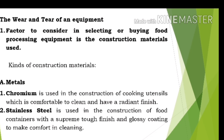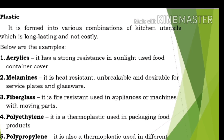The wear and tear of equipment is a factor to consider. A key factor in selecting or buying food processing equipment is the construction materials used. Kinds of construction materials include metals. Under metals: Chromium is used in the construction of cooking utensils, which is comfortable to clean and has a radiant finish. Stainless steel is used in the construction of food containers with a tough finish and glossy coating to make cleaning comfortable. Plastic is formed into various combinations of kitchen utensils, which is long-lasting and not costly.